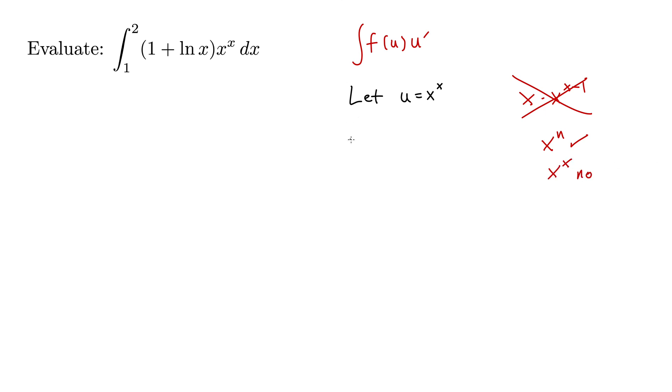So instead we need logarithmic differentiation here, so let's let y be x to the x, and then we'll take the natural log of both sides here. And this is what you do every time you want to take the derivative with something with an x in the base and an x in the exponent. The natural log of both sides will bring that x down from the exponent, that's the cool thing about natural logs, one of the cool things. So we now have natural log of y equals x natural log x.